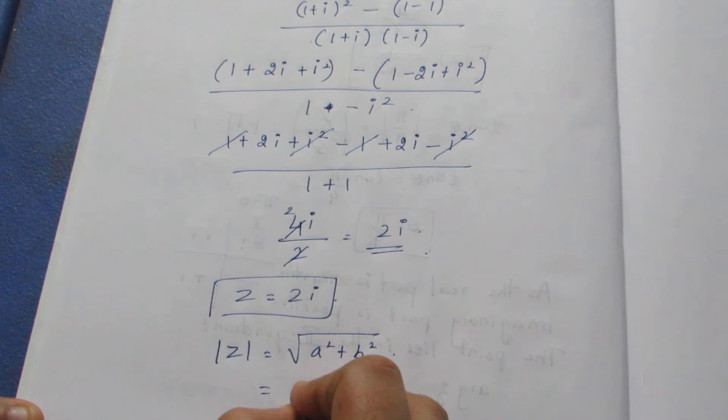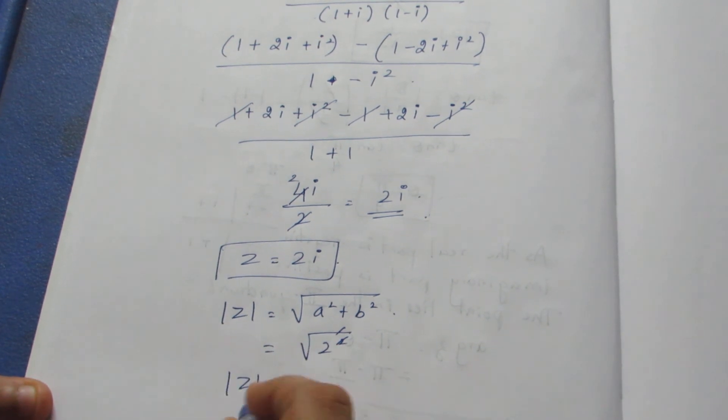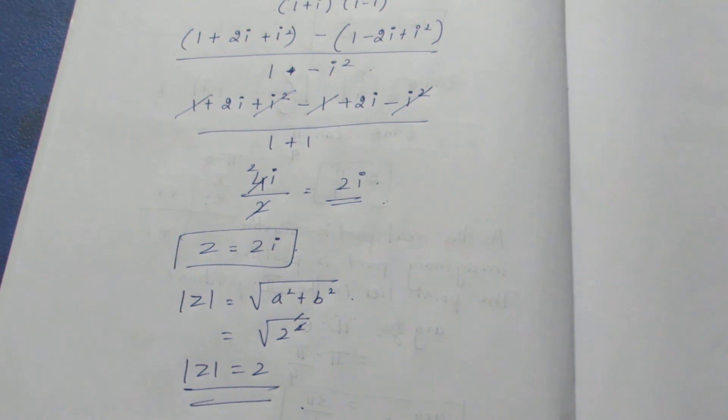We don't have a real part here, so it becomes square root of 2 squared. Square root and square get cancelled, so your final answer will be 2. So modulus z equal to 2 is your final answer for this sum.